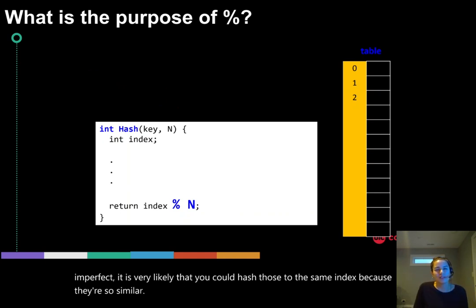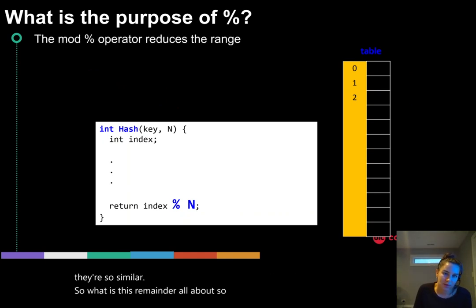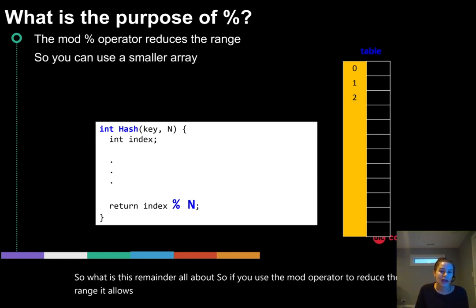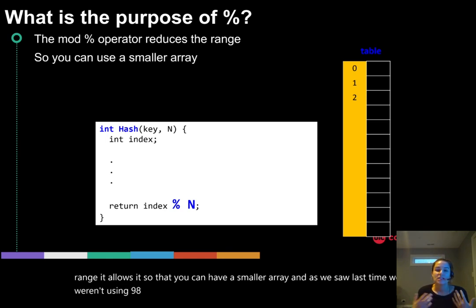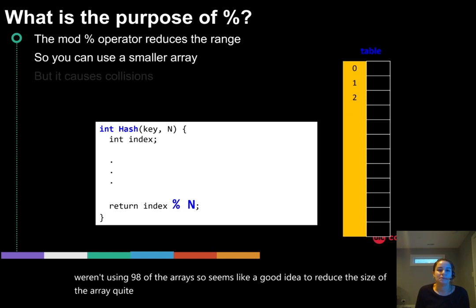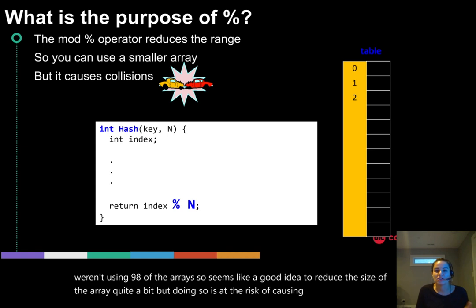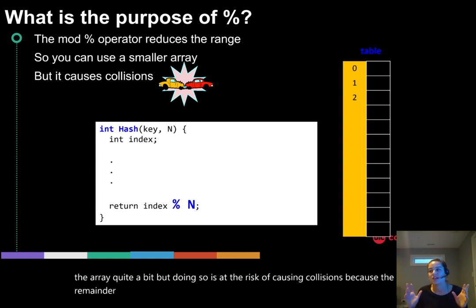So what is this remainder all about? So if you use the mod operator to reduce the range, it allows it so that you can have a smaller array. And as we saw last time, we weren't using 98% of the array. So it seems like a good idea to reduce the size of the array quite a bit.